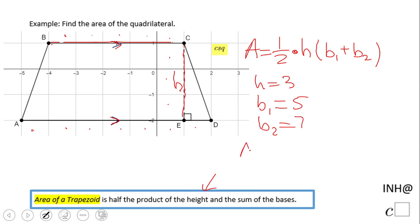And now we just plug all this information in: one half times three times five plus seven. One half times three times twelve. And then maybe you want to simplify—two goes into this six times.